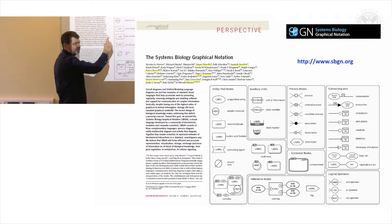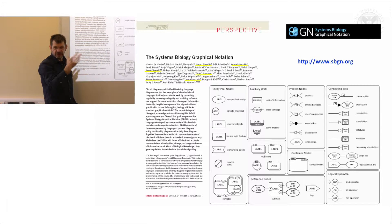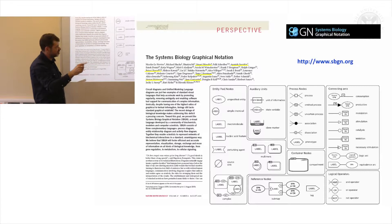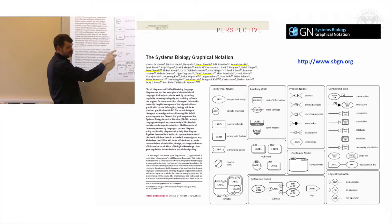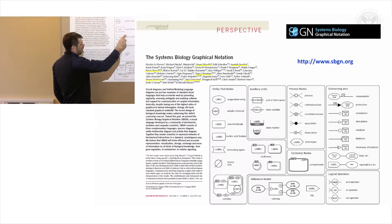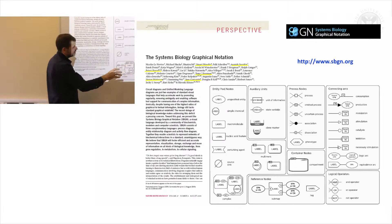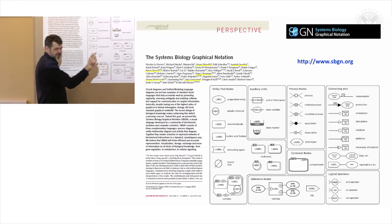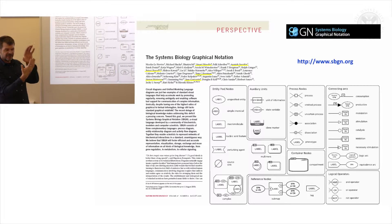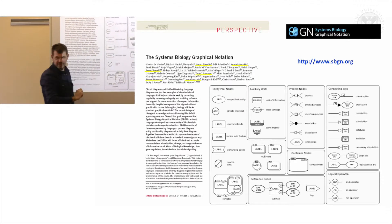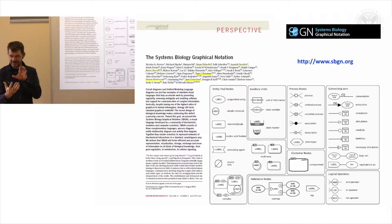A macromolecule generally means a protein, represented as a rounded rectangle. A gene, or nucleic acid feature as they prefer to call it, is drawn with two square corners and two rounded corners. When you want to draw a protein complex, you overlap two macromolecule glyphs to indicate there are two, four, or more of them, and you put a small number to indicate how many are in that stack.